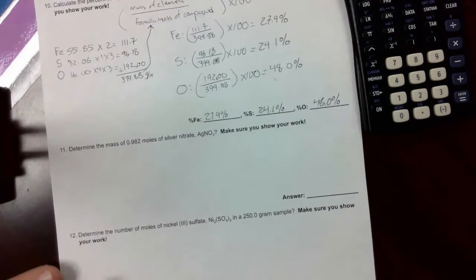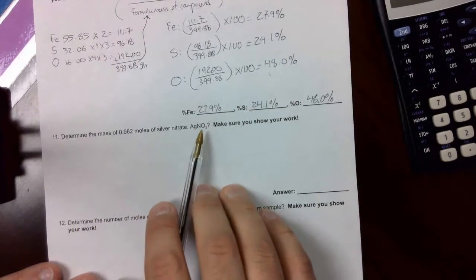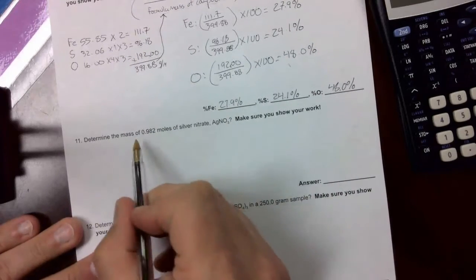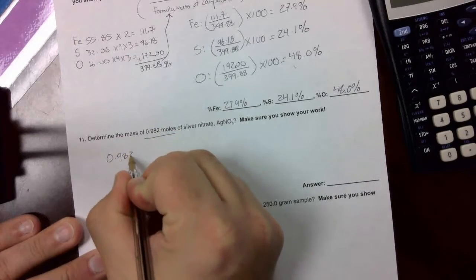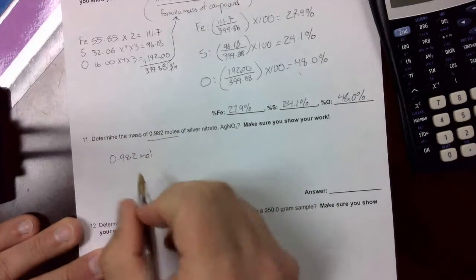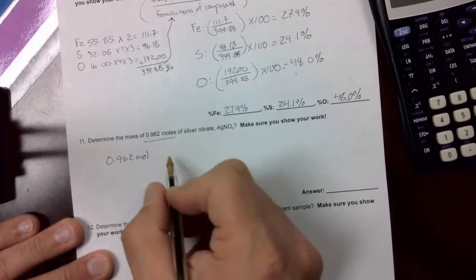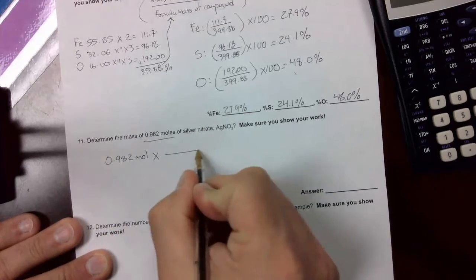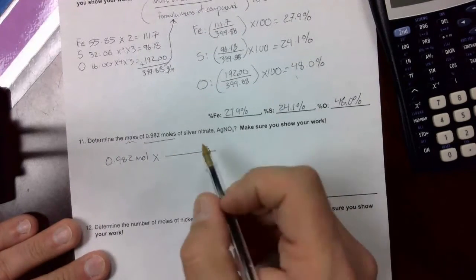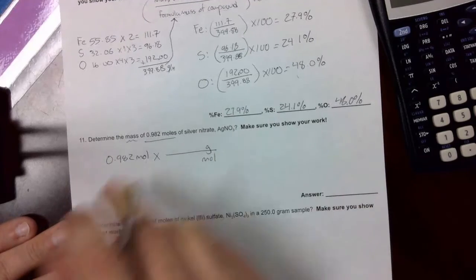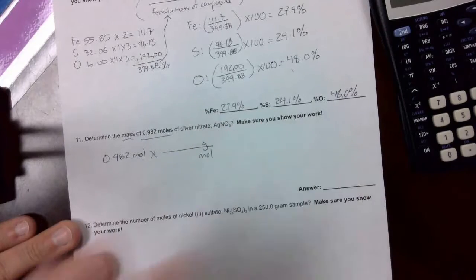The next question asks us to determine the mass of 0.982 moles of silver nitrate. Right? So we're going to start this problem off by writing down what they give us. 0.982 moles. And we're going to convert. Determine the mass. We've got moles, so we need to change that. So we need times and a line. We need to find grams. That's what it's asking us to figure out. And we want to get rid of these moles, so that goes on bottom. Now, we need some numbers to put in there. We're not given the formula mass. And that's why this is 3.0, because we have to calculate it real quick.